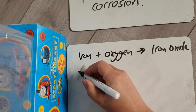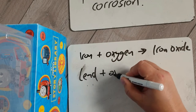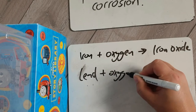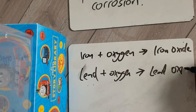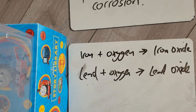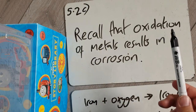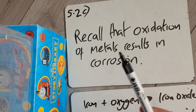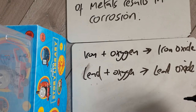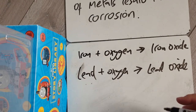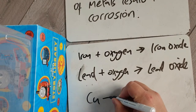The same applies to any metal. If we had lead, lead plus oxygen goes to lead oxide. So oxidation is adding oxygen, and adding oxygen to metals results in corrosion. The same applies if we write a chemical equation — copper (Cu) plus oxygen (O2) goes to copper oxide.